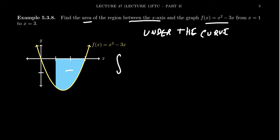So to find this area, we're going to integrate from 1 to 3 our function, x² - 3x dx. And again, by the Fundamental Theorem of Calculus, we can use an antiderivative to help us out here.